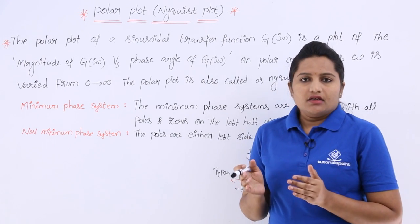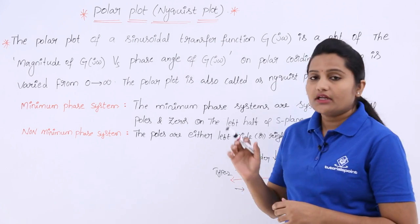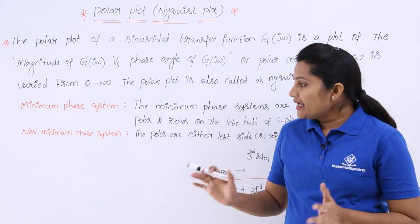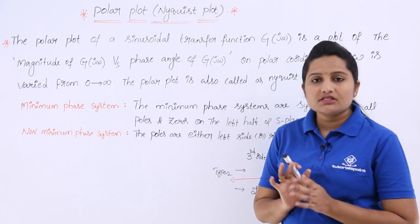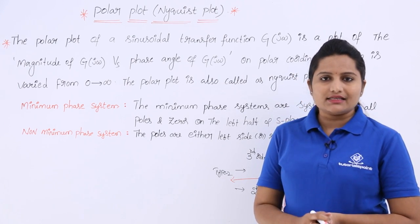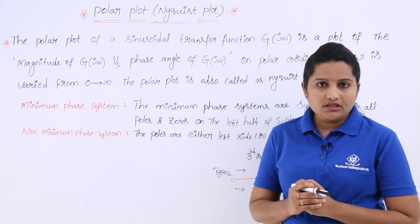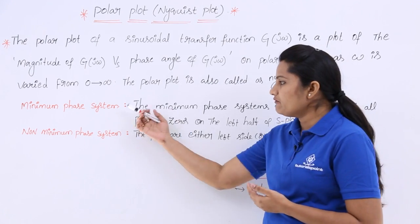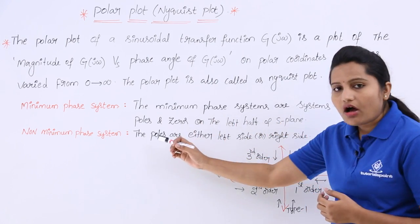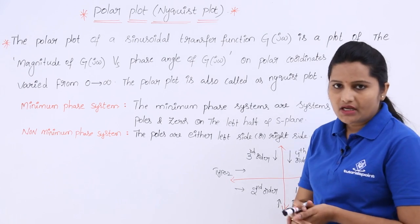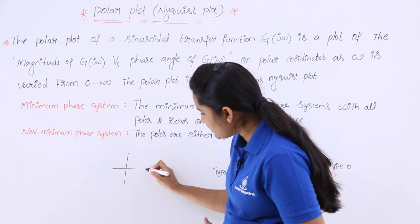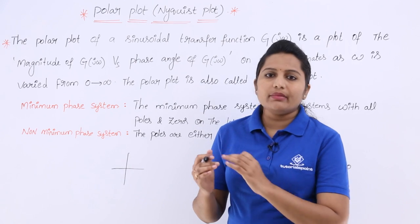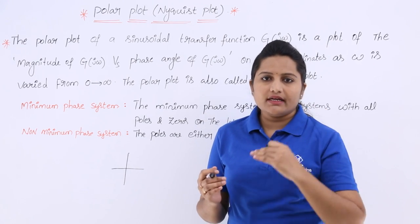In the introduction to Nyquist plot, it is better to cover minimum phase and non-minimum phase systems, because in many technical exams they will give a polar plot and ask whether the system is a minimum phase system or not. Zeros are calculated by equating the numerator polynomial to zero, and poles are calculated by setting the denominator S terms to zero.